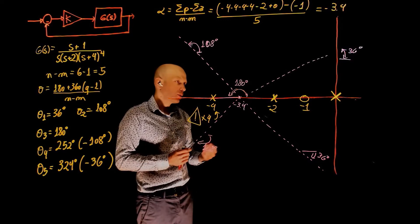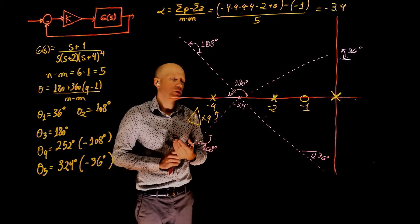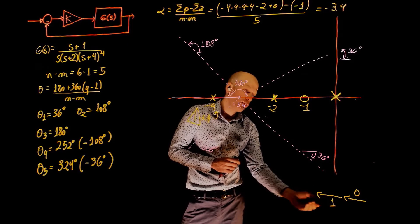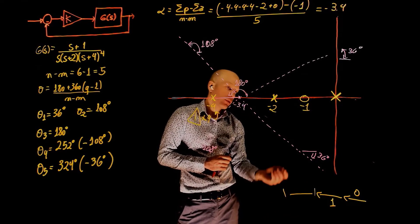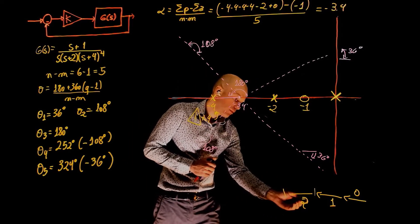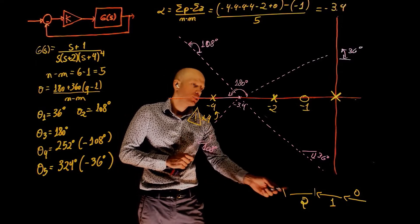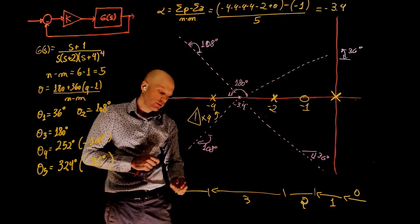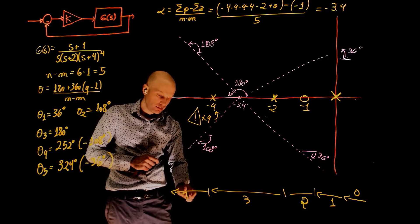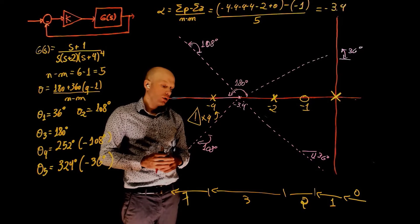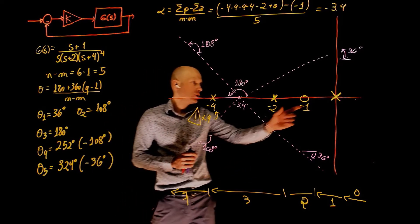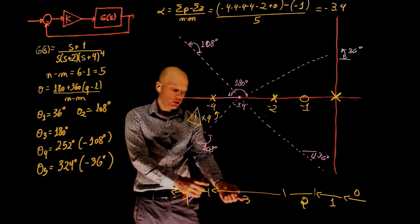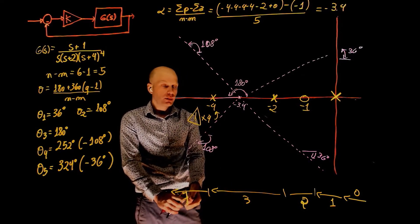Now where is the root locus? The root locus exists to the left of an odd number of poles and zeros. The count to the right of 0 is zero; between 0 and negative 1 it is one; between negative 1 and negative 2 it is two; between negative 2 and negative 4 it is three; and to the left of negative 4 the count is seven. So the root locus exists between 0 and negative 1, between negative 2 and negative 4, and to the left of negative 4.